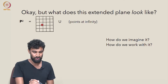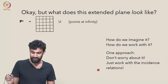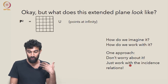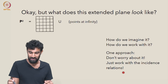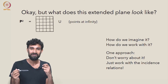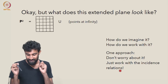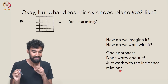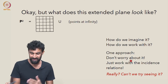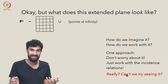I'm going to visually represent R2 by this grid here. One approach is to just say, let's not worry about how it looks or how we can imagine it as a whole, because it might be very counterintuitive and we might get tripped up over our own preconceived notions. So let's just work with the incidence relations and definitions directly. There's some merit to that approach, but on the other hand, can't we just try seeing it or imagining it?